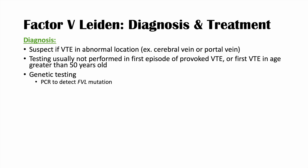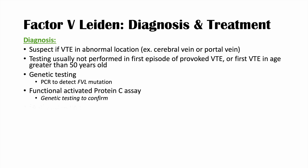Genetic testing using PCR can detect the FVL mutation. A functional activated protein C assay can also be performed — since activated protein C cannot inhibit activated Factor V in Factor V Leiden — but genetic testing is usually needed to confirm the diagnosis. Once an individual is diagnosed with Factor V Leiden, family screening is important because it is an autosomal dominant condition: at least one parent also carries it, and siblings or children may as well.